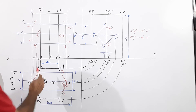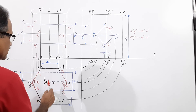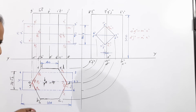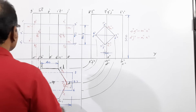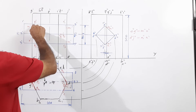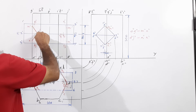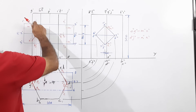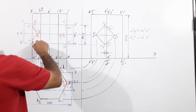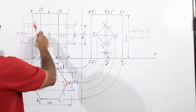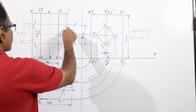When you connect the intersection curve in the plan, the curve runs as shown. The dotted portion of the horizontal prism that is inside the vertical prism becomes invisible. Connect M-dash to P2-dash, P2-dash to N-dash — these portions are dotted because they are invisible inside the vertical prism.